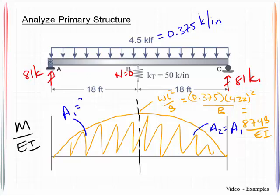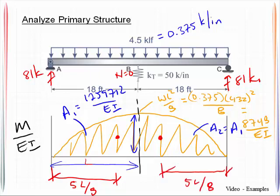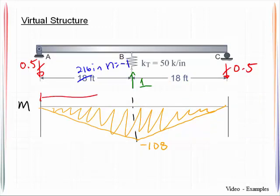The maximum moment is WL²/8 = 0.375 × 432² / 8 = 8,748, divided by EI. Area A1 is computed as two-thirds times the half-span times the peak ordinate, giving 125,971.2 over EI. For a second-order parabolic curve, the centroid is at 5/8 of the half-span length L. Projecting back onto the virtual m diagram at 5/8 L using similar triangles gives a value of negative 67.5.